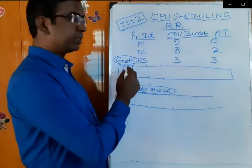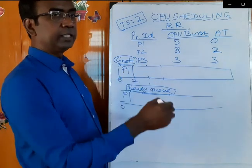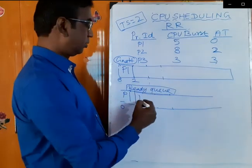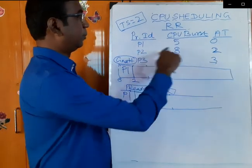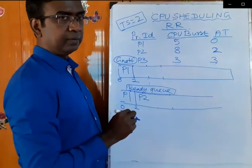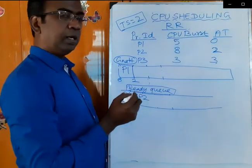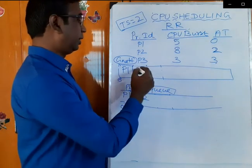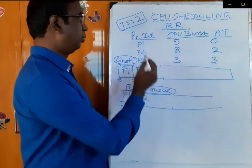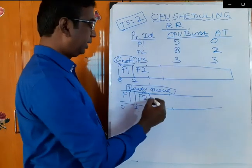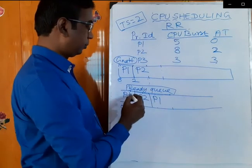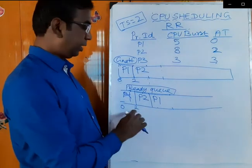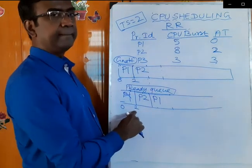After two seconds, the CPU will check the ready queue. At that point, P2 has also entered the ready queue. The operating system will ask process P2 to enter into the CPU and place P1 at the end of the queue at the second second.